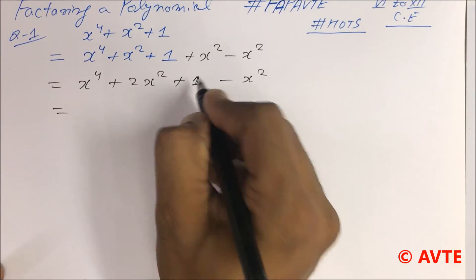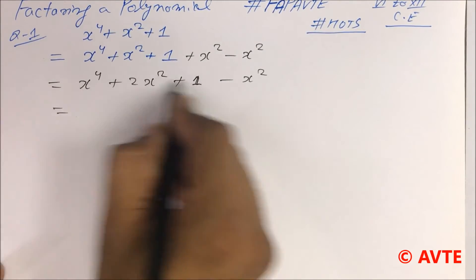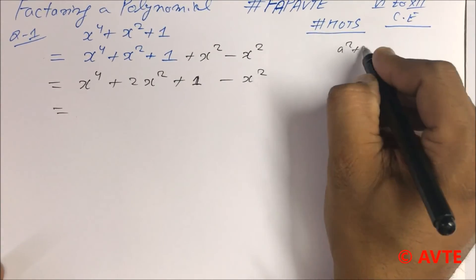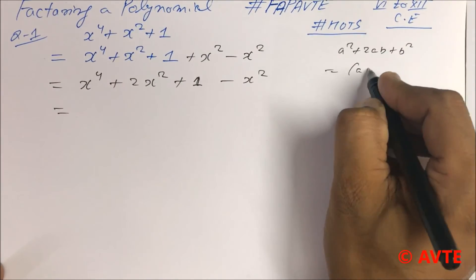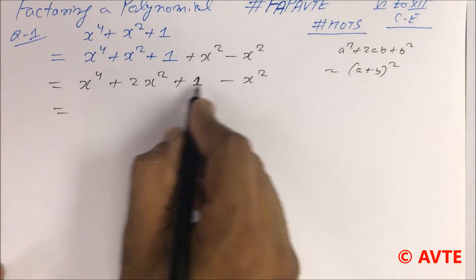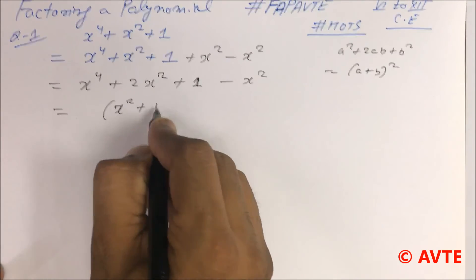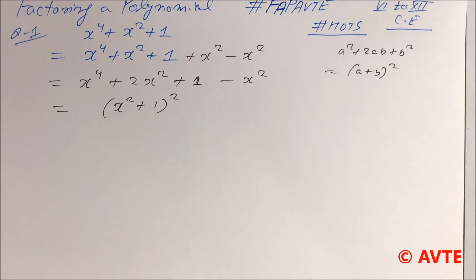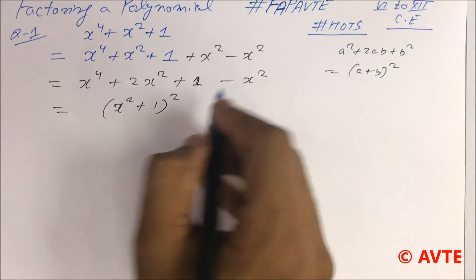So guys this becomes your packing of a plus b whole square. So this is your x square plus 1 whole square. Got it? And this is your minus x square.